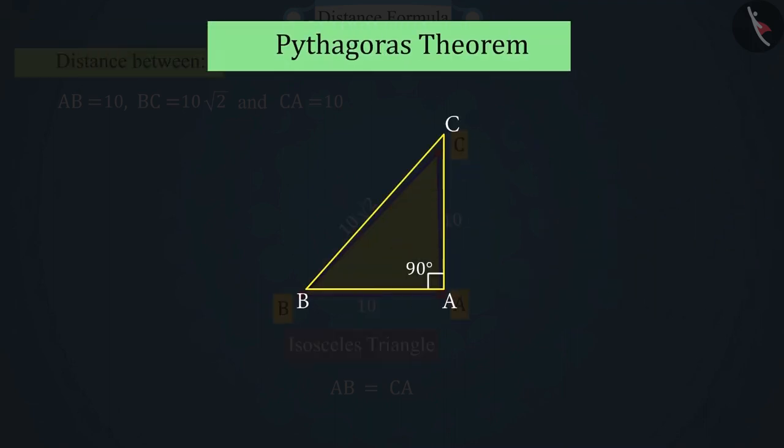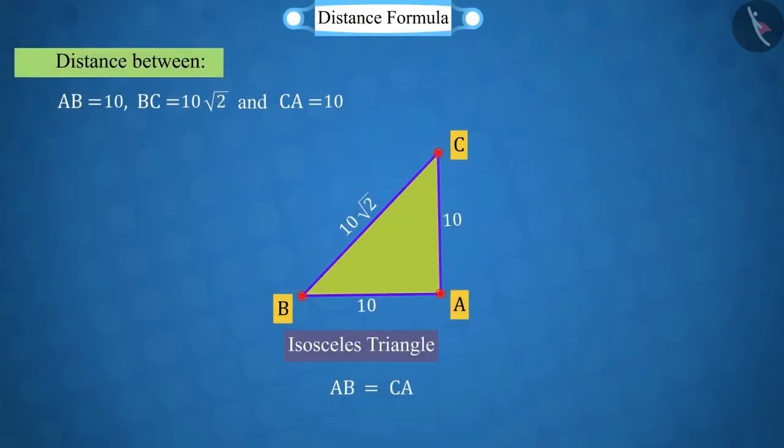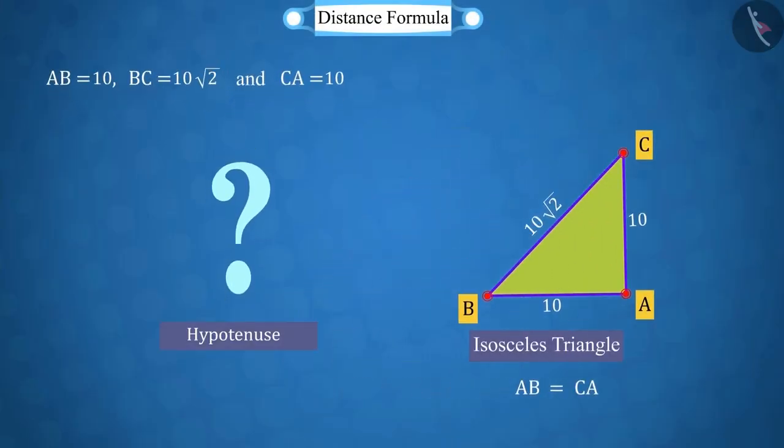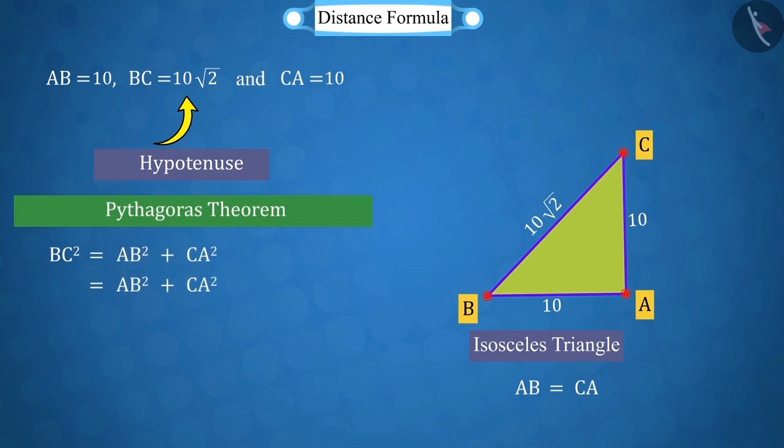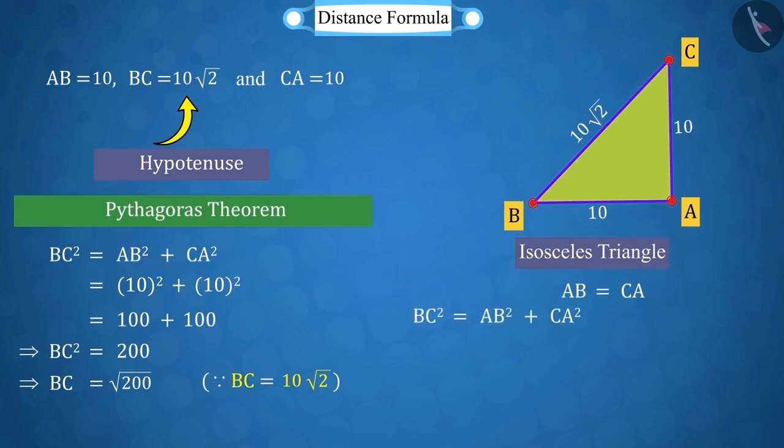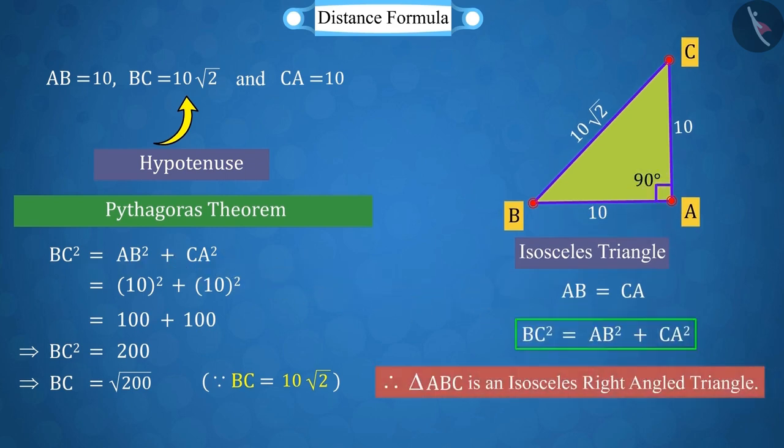Good! For this, we will use the Pythagoras theorem. First of all, can you tell from which of these three sides AB, BC, CA will be the hypotenuse? From the measure of these three sides, we observe that the hypotenuse of this triangle will be BC, because the length of BC is the largest. Now, by placing the values of these three in the Pythagoras theorem, let's verify if it's a right-angled triangle. If we sum the squares of AB and CA, we get 200, which is equal to the square of BC. So, we can say that it is an isosceles right-angled triangle.